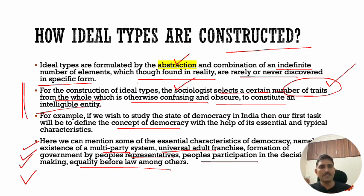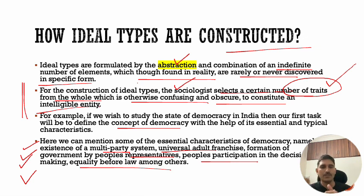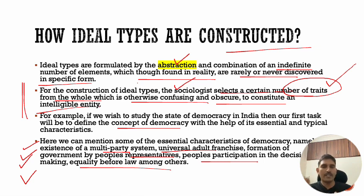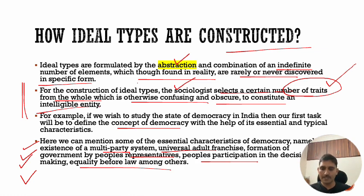So this sentence is now clear: ideal types are formulated by abstraction and combination of an indefinite number of elements from different countries — fundamental rights from one place, the presidential election system from another, directive principles from elsewhere. These elements, though found in reality, are rarely or never discovered in a specific form all together in one place. This is how Weber explained that ideal types are constructed.